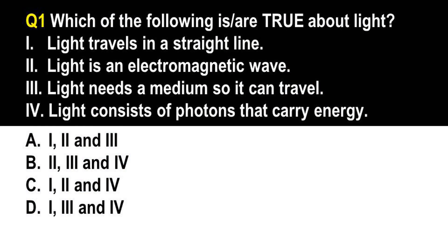Question number 1. Which of the following is or are true about light? 1. Light travels in a straight line. 2. Light is an electromagnetic wave. 3. Light needs a medium so it can travel. 4. Light consists of photons that carry energy. A. 1, 2, and 3. B. 2, 3, and 4. C. 1, 2, and 4. D. 1, 3, and 4.